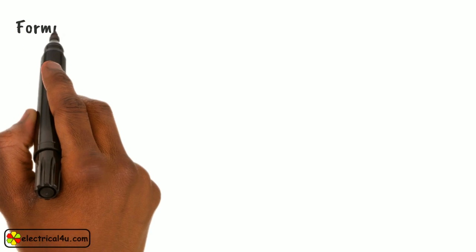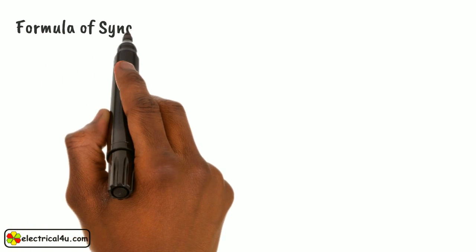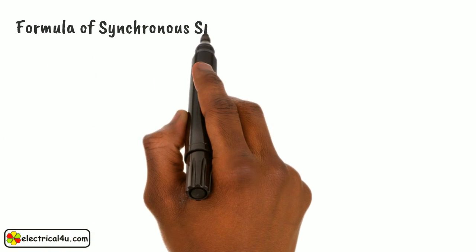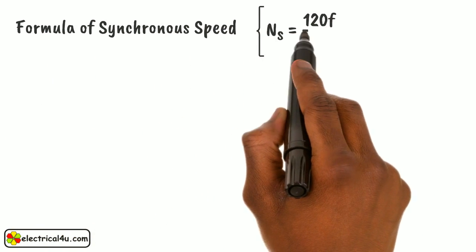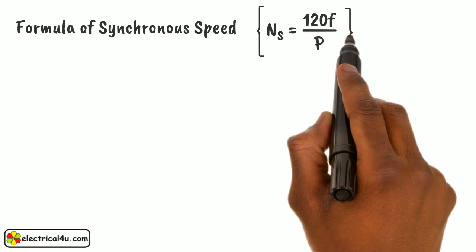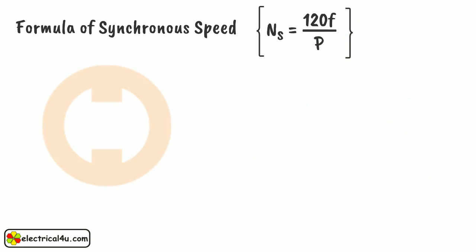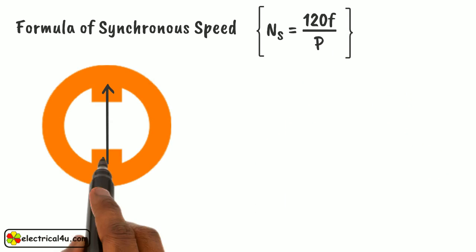Let us establish the formula of Synchronous Speed. Before establishing the formula, let us examine what happens if we supply an alternating current to an electromagnet. An electromagnet has obviously two magnetic poles physically 180 degrees apart from each other.